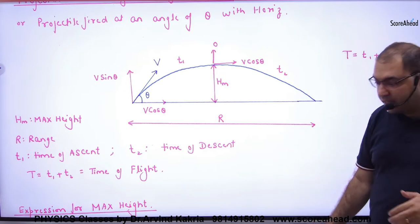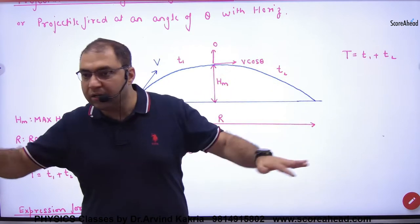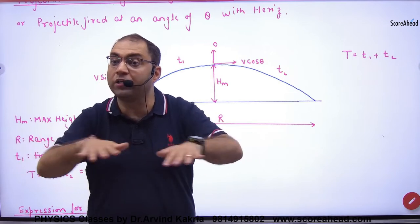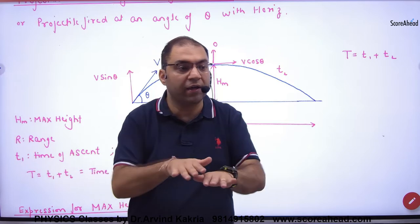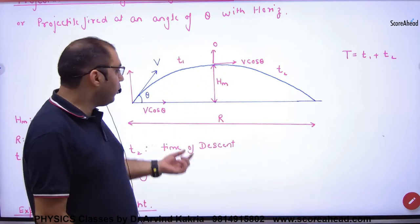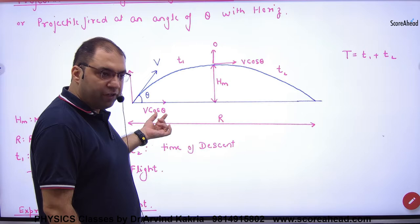So I will derive R. Now what is the expression of R? What is horizontal motion? To derive R, which equation will be in x-axis? Velocity is constant. How much? vcos theta.